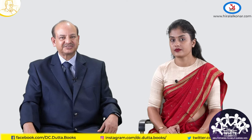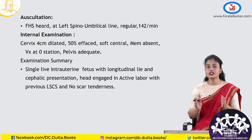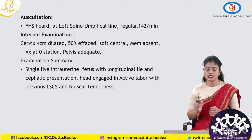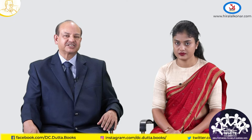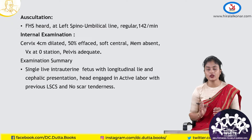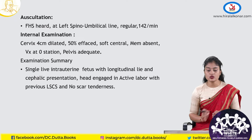Coming to auscultation, fetal heart sounds were heard in the left spino-umbilical line, regular, at 142 beats per minute. Coming to internal examination: cervix was 4 centimeters dilated, 50% effaced, soft, central, membranes were absent, and vertex was at zero station. Pelvis was adequate. As an undergraduate student, you are not expected to do a vaginal examination — these findings will be given to you along with the patient details.